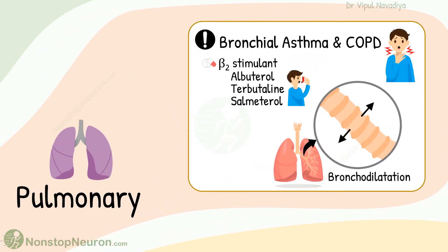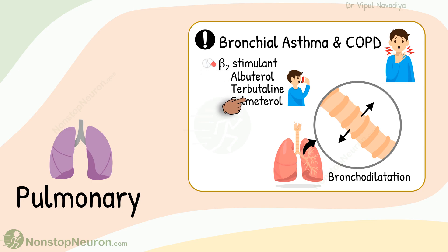Now let's move into the respiratory system. Adrenergic drugs are used in bronchial asthma and COPD. Beta-2 stimulant agents like albuterol, terbutaline, and salmeterol cause bronchodilatation and help patients breathe.